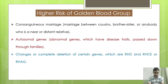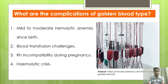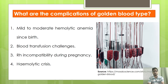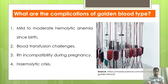What are the complications of golden blood types? First, mild to moderate hemolytic anemia is present from birth. Second, blood transfusion is a major challenge because only nine active donors are present in the world, and only 43 individuals have this particular blood type. So whenever a person needs a blood transfusion due to severe disease or an accident, obtaining compatible blood is extremely difficult.